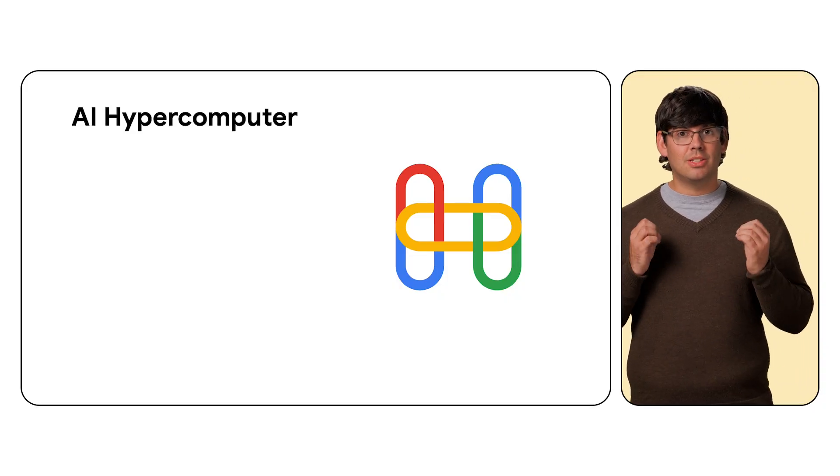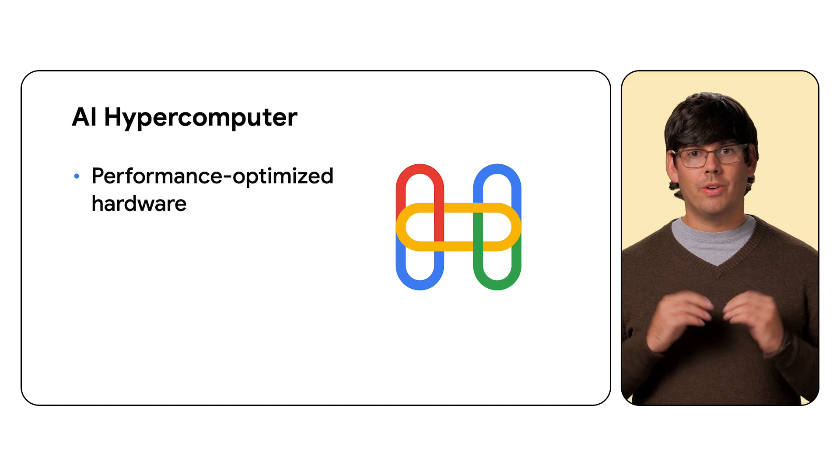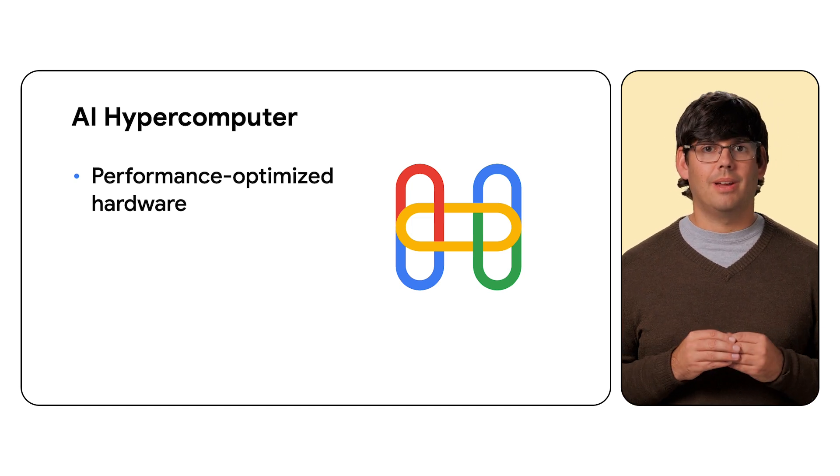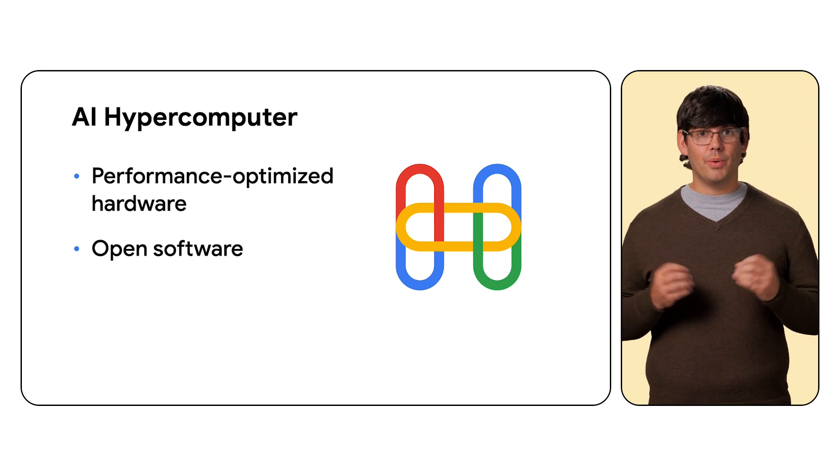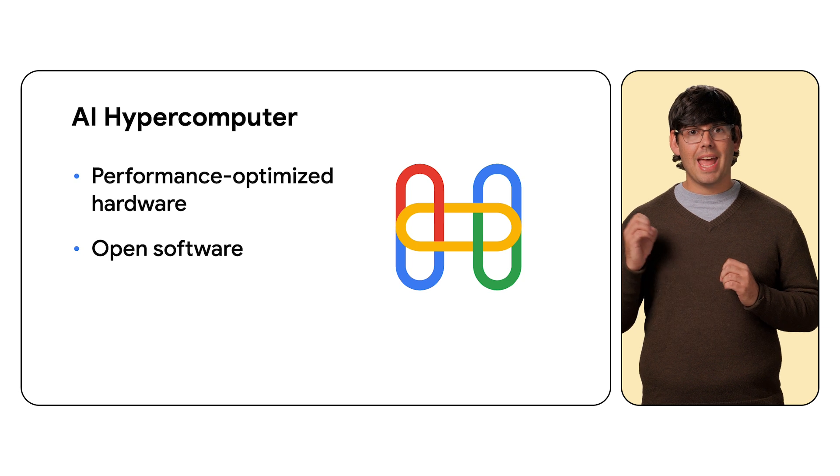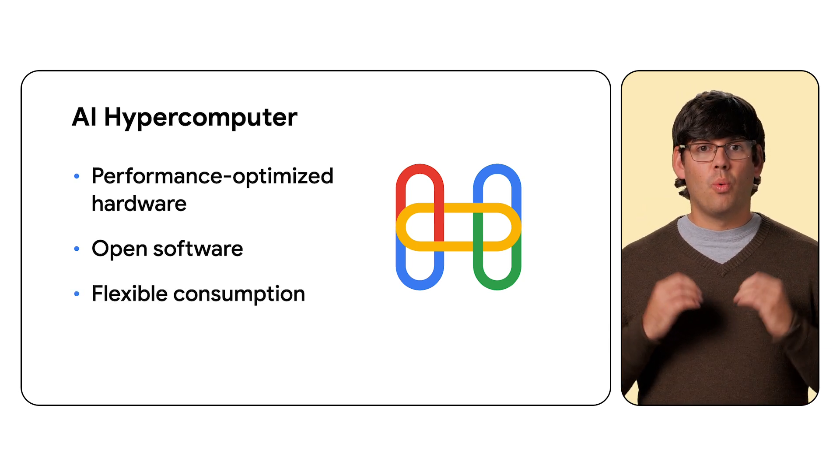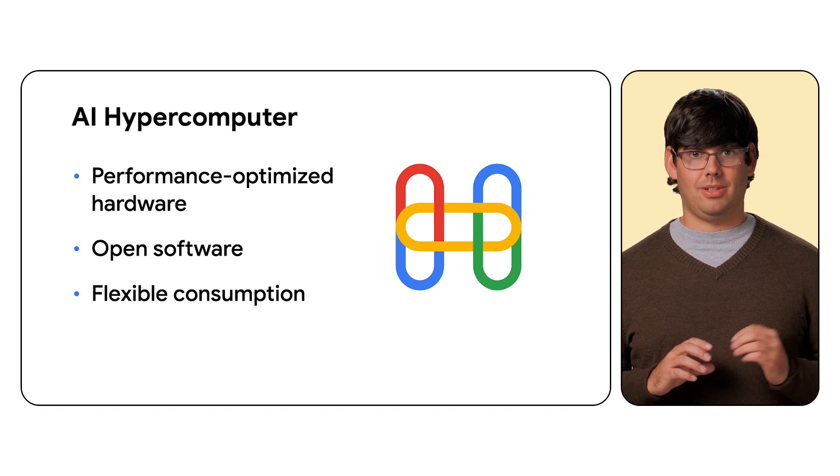Components themselves are classified into three main categories, which are performance optimized hardware for compute such as cloud TPUs and cloud GPUs, storage and networking, open software that you can use within your own stack with machine learning frameworks such as JAX and PyTorch to other components such as Jetstream for running LLM inference workloads, and flexible consumption that allows you to control what you use, utilizing concepts such as the dynamic workload scheduler.